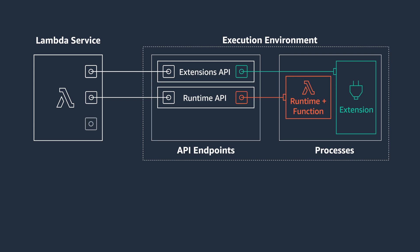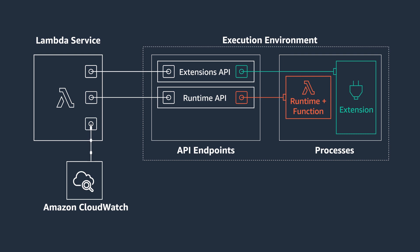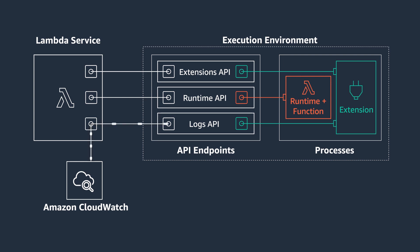Before we wrap up, let's talk a little bit about logs. To help you troubleshoot failures in a function, the Lambda service automatically captures logs generated by your function and streams them to CloudWatch. This log stream contains the logs generated from within your function code and also those generated by the Lambda service as part of the Invoke. Extensions for tools like log routers can now use the logs API to subscribe to these log streams, and the Lambda service will then stream logs to the extension. Previously, third-party tools would get logs via CloudWatch, and now they can also use the logs API to get them directly from within the Lambda environment.